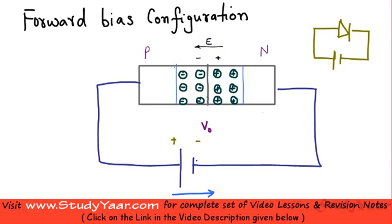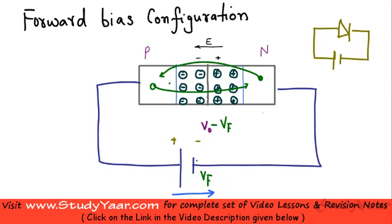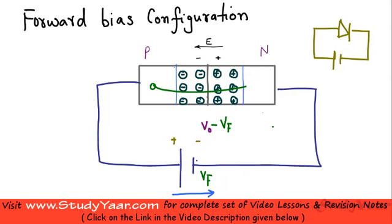If we say that this voltage is VF — that is the forward bias voltage — then the voltage across the potential barrier, which was earlier V0, now becomes V0 minus VF. So you have lesser resistance to your majority charge carriers. Your holes are now going to move to the N region and your electrons are going to move to the P region, because this potential barrier voltage has been reduced. More diffusion is going to happen and your depletion region is narrowed.